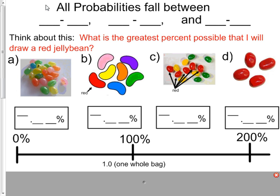Let's think about this example below. What is the greatest percent possible that I will draw a red jelly bean? We have four different piles of jelly beans. Let's take a look at what percent chance I have of drawing red. That is theoretical probability.